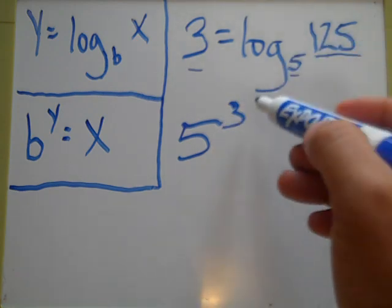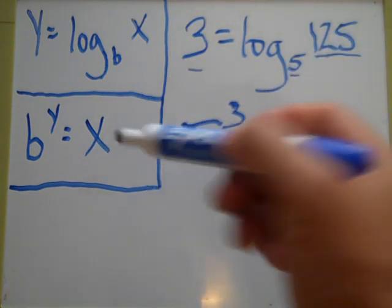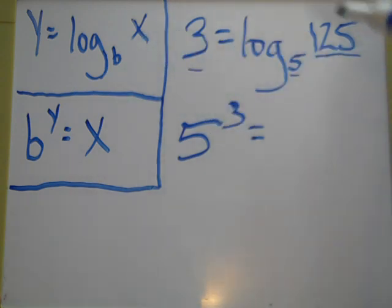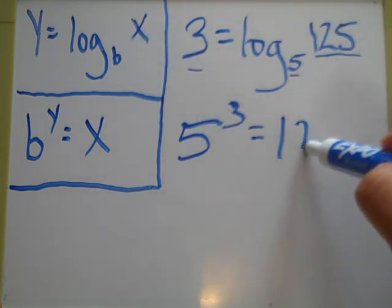So now you've got 5 to the 3 equals x. As you can see, x here is 125.